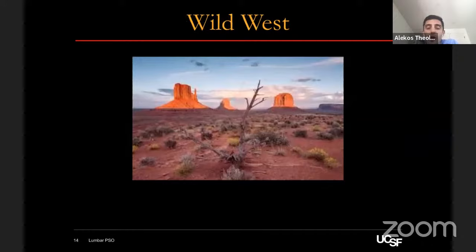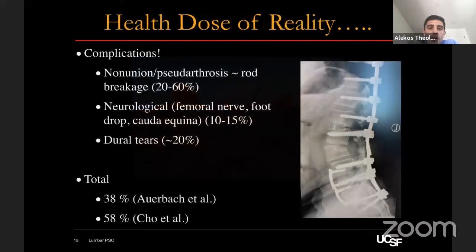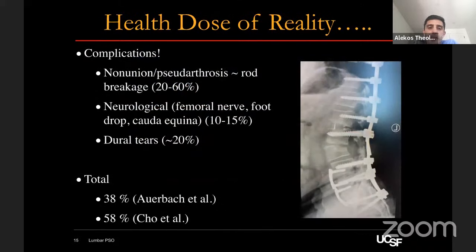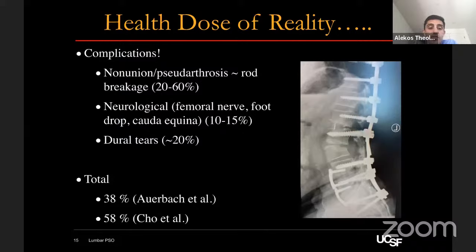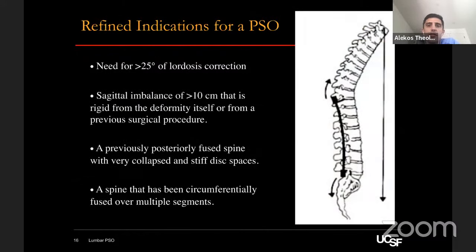This was really an awakening when it came to the sagittal plane and the use of PSOs. But many people got a healthy dose of reality as complications started to set in — not only short-term neurologic injuries, with the WashU group reporting 15% femoral nerve injuries, foot drops, and cauda equina — but also longer-term consequences: non-union and pseudarthrosis reported up to 60%. Total complication rates were quite staggering, with Cho reporting nearly 60%. This was very humbling and forced us to determine which patients are best suited for lumbar PSO.